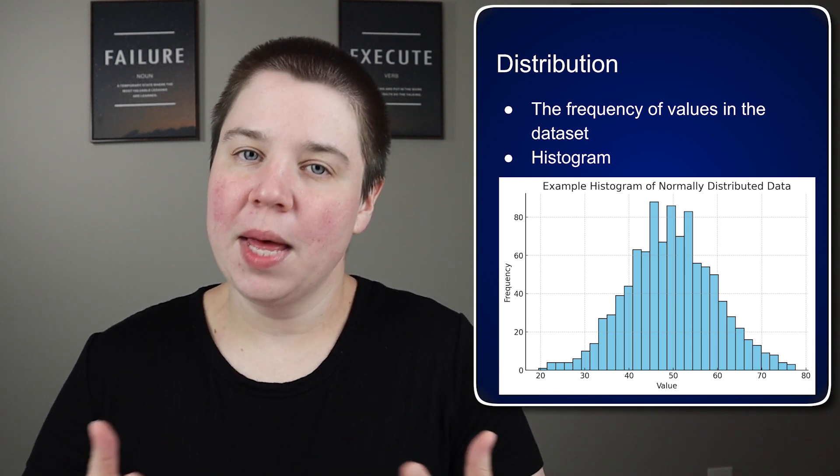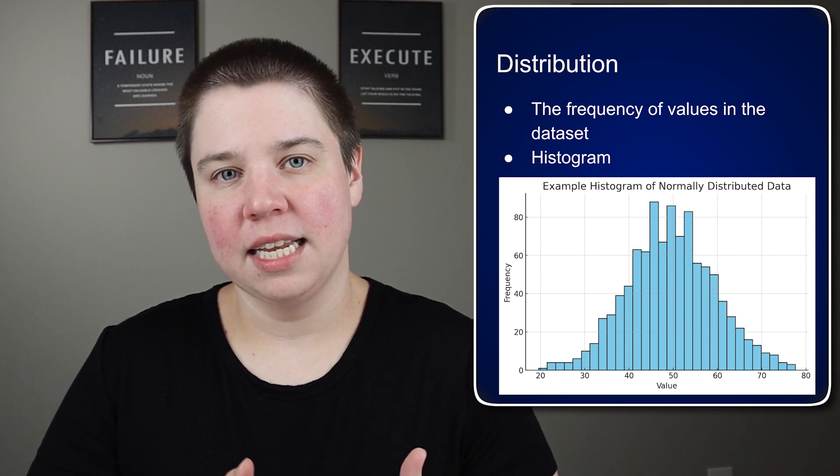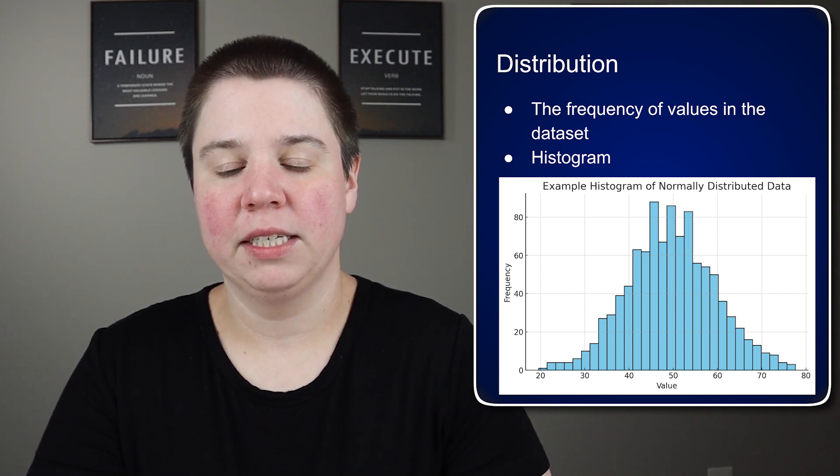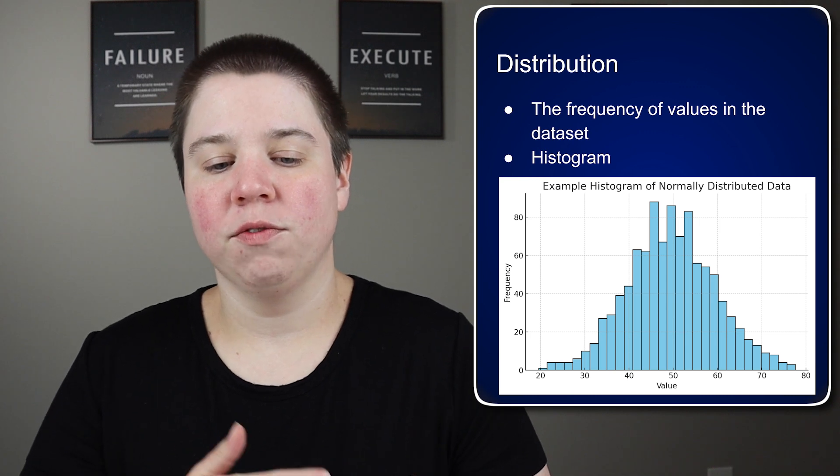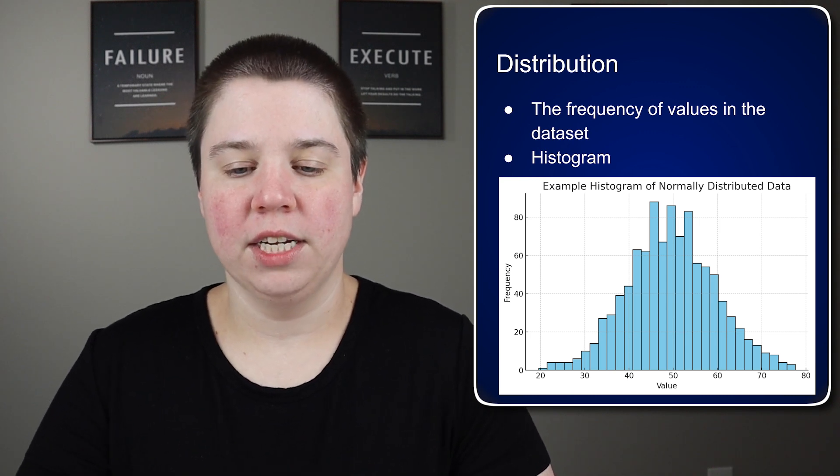You can see it follows what we call the bell curve, where it is highest in the middle and then tapers off symmetrically from side to side. Essentially, this is showing us the frequency of values for each individual value.